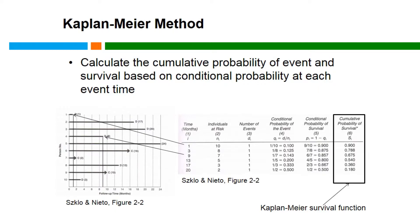Let's walk through an example of a Kaplan-Meier curve calculation. The figure depicts a hypothetical cohort of 10 individuals followed for 24 months. At each month, three possible outcomes are observed: either the individual remains in the cohort without the health event, the individual is lost to follow-up — indicated with a C representing censored values — or the health event has occurred. In this case, the health event is death.